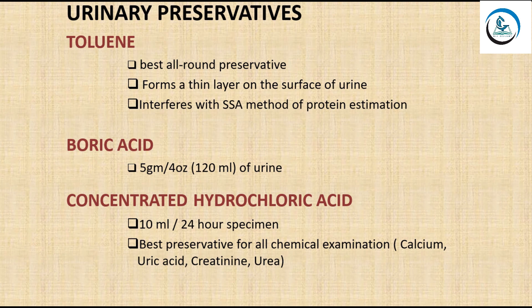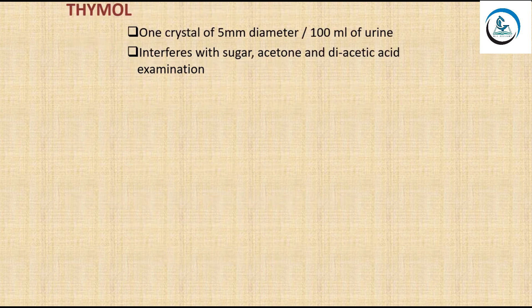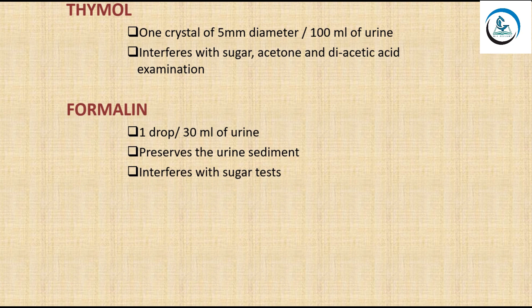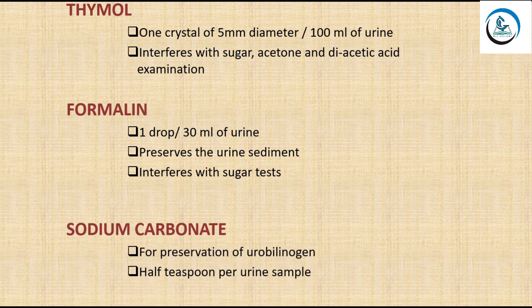Concentrated hydrochloric acid, used at 10 ml per 24-hour specimen, is the best preservative for all chemical examinations including calcium, uric acid, creatinine, and urea. Thymol is added as one crystal of 5 mm diameter per 100 ml of urine, but it interferes with sugar, acetone, and diastase acid examination. Formalin is added at one drop per 30 ml of urine; it preserves the urine sediment but interferes with the sugar test.